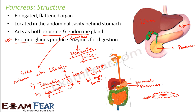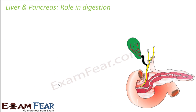So now you have an idea about these three organs — liver, gallbladder, and pancreas. Liver secretes bile juice and pancreas secretes pancreatic juice. Now we need to see how bile juice and pancreatic juice help in the process of digestion.